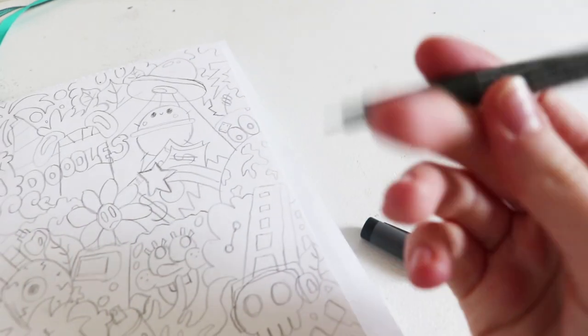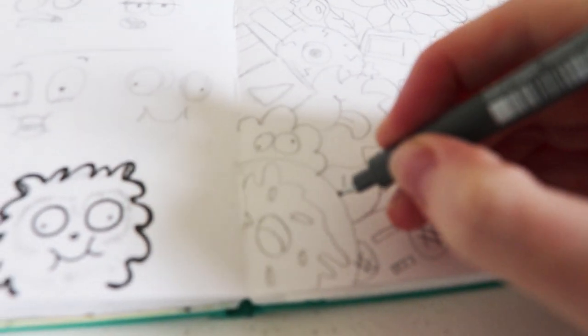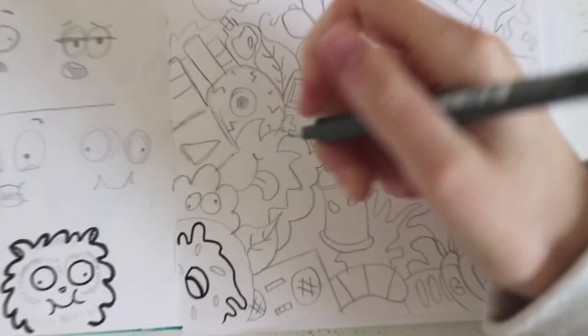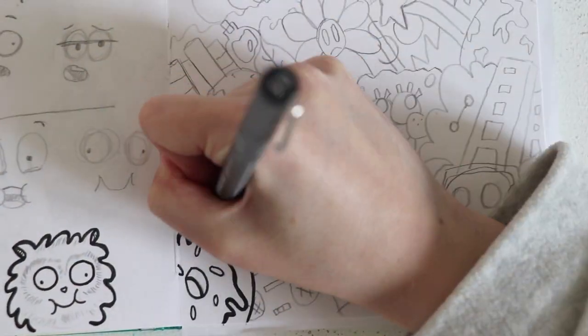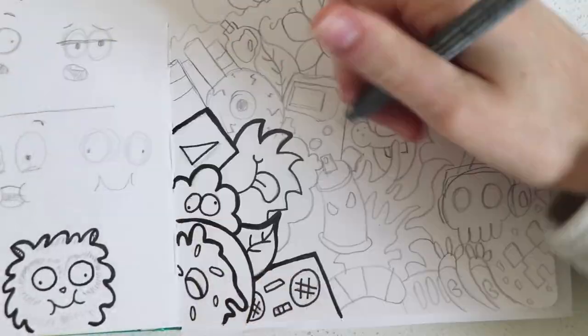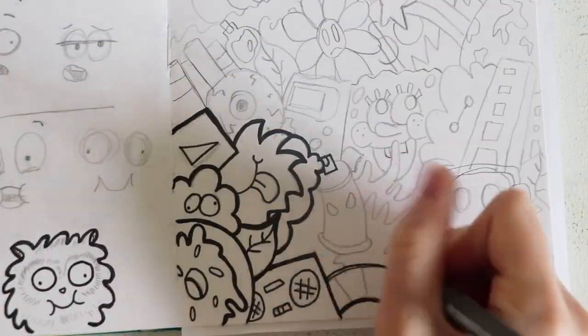Today I'm going to be using the 0.5 Staedtler fineliner. Now when drawing the lines, you want to make sure to add a thicker line around your doodles, which you'll be able to see me doing here. It just makes it look a lot more defined, as they say.